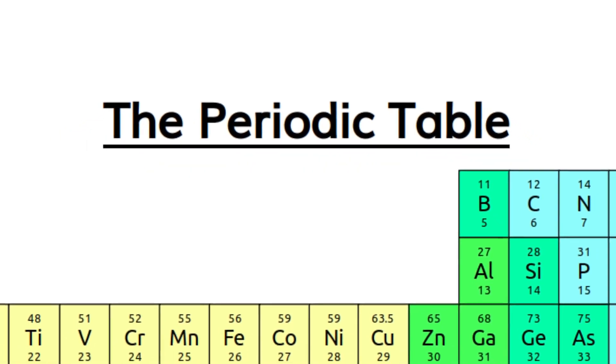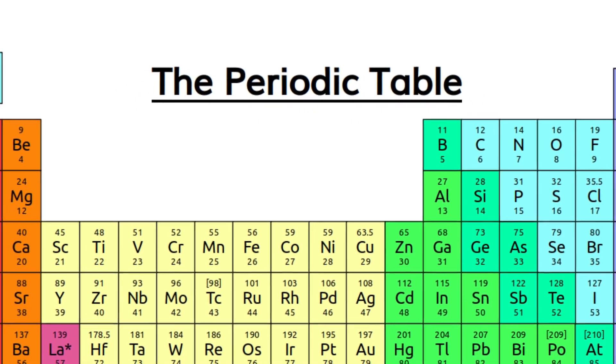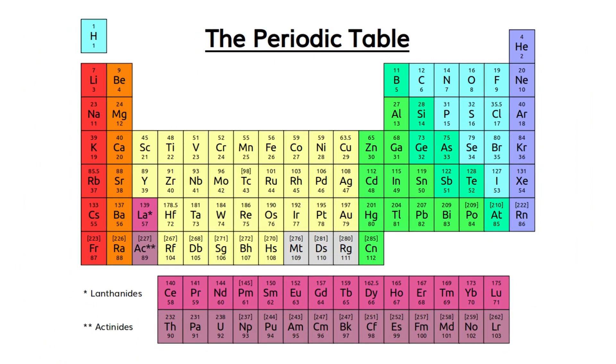We list all the elements we know about in the periodic table. We could just make a simple list of them, but some of the elements have similar properties. So we organize them according to those properties, giving us this unusually shaped table. These properties are the result of the electron structure of different elements, and if you click the link on screen, you can watch a video all about this. The link will also be in the description.